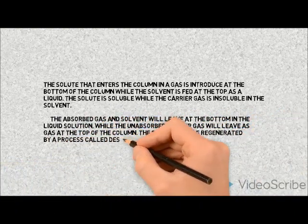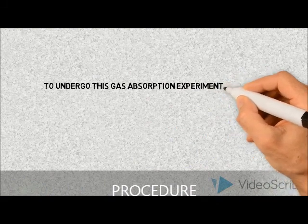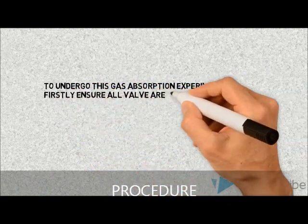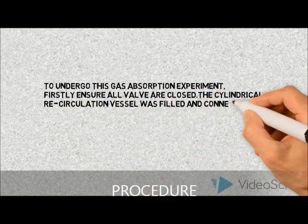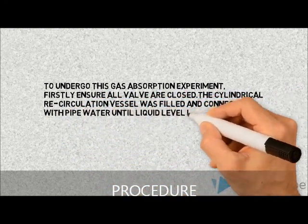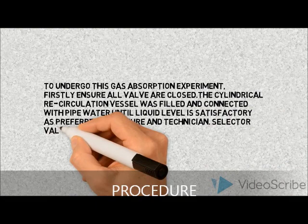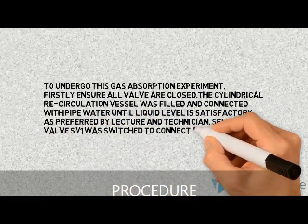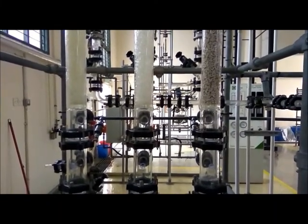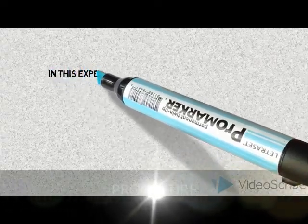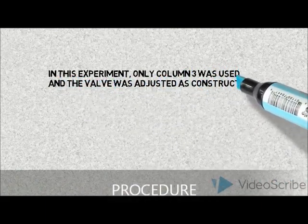The solvent can be regenerated by a process called desorption. To undergo this gas absorption experiment, firstly ensure all valves are closed. The cylindrical recirculation vessel was filled and connected with pipe water until the liquid level was satisfactory. Selector valve SV1 was switched to connect to the column chosen. In this experiment, only column 3 was used and the valve was adjusted as instructed from the lab manual.